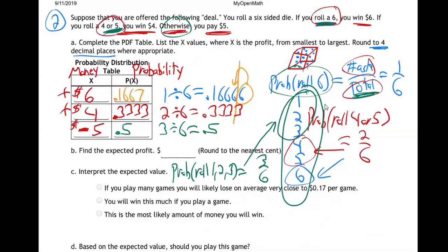So what do you guys think about this game? Do you think this is a fair game, a good game? Would you play this game at a casino or something? You have a 50% chance of losing, which also means you have a 50% chance of winning. There's a half chance of winning, and if you win, you win $6 or maybe $4. Well, the answer to whether this is a good game to play is in the calculation called expected profit or expected value — same thing.